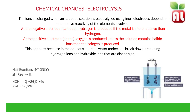Half equations can be used to represent the reactions at each electrode. At the positive electrode, the negative ions are attracted and lose electrons. At the negative electrode, positive ions are attracted and gain electrons. Oxidation is the process of losing electrons and reduction is the process of gaining electrons. Therefore, at the negative electrode, positive ions gain electrons — this process is reduction. At the positive electrode, ions lose electrons — this process is oxidation.